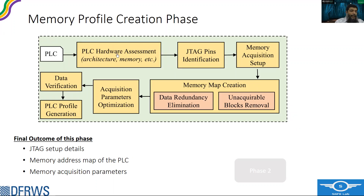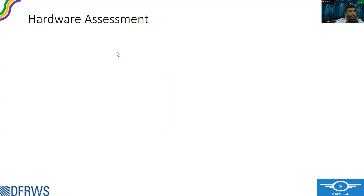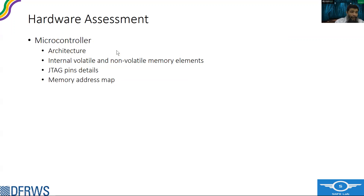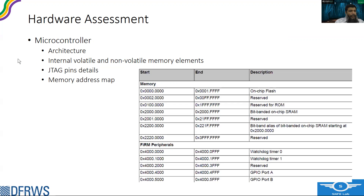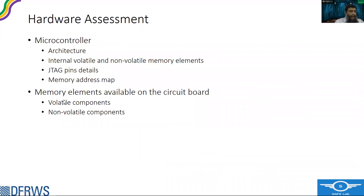In Phase 1, the first step is hardware assessment. While analyzing the hardware of a PLC, we are mostly interested in the microcontroller, its architecture, internal memory, volatile and non-volatile memory components, the JTAG pins of the microcontroller, and the memory address map — where the flash resides, where the RAM resides, and what the peripheral addresses are. We also look at the external memory elements on the circuit board, since the internal memory of a microcontroller is often insufficient. Removable storage, while not part of memory, helps verify the memory content we acquire.